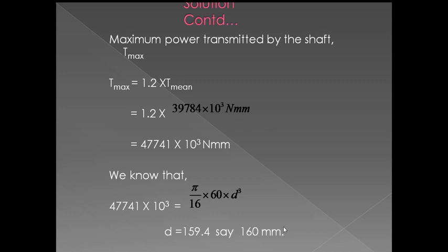So when the maximum torque is 1.2 times the mean torque, you need to add 20% to the mean torque — that is 1.2 times the mean torque. This completes the first problem.